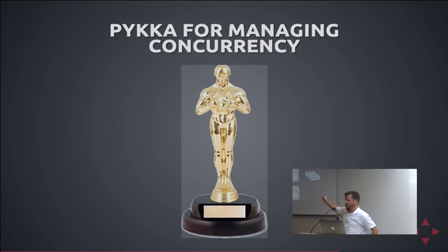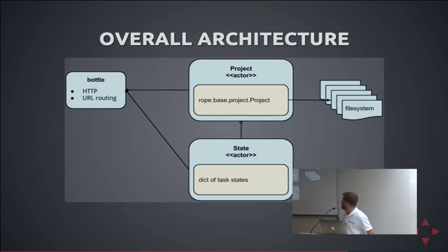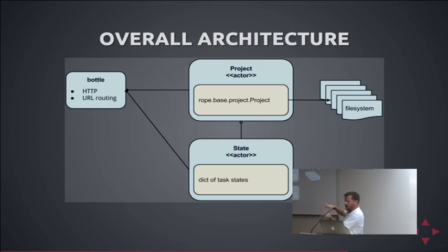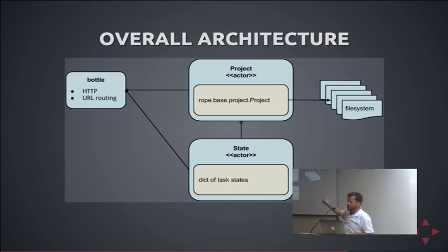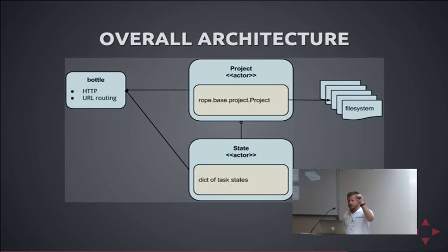The architectural diagram: you have Bottle at the front receiving all inputs and two actors. The project actor handles all the actual talking to Rope — it takes requests for renaming, method extraction, et cetera, and works directly on the file system, which the editor is also looking at. The other actor is the state actor, which keeps track of each request and its current state, and can be queried through Bottle as well.